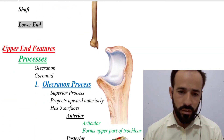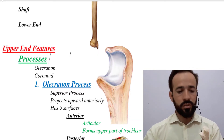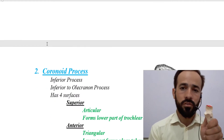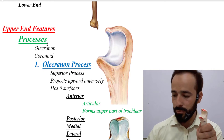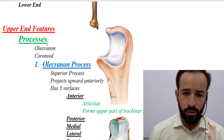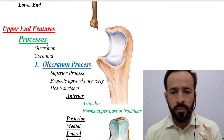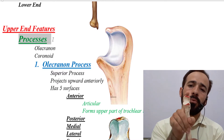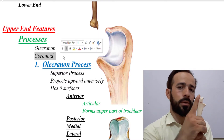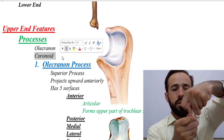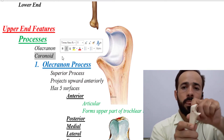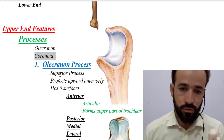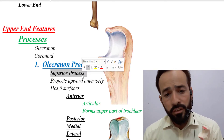The two processes are the olecranon process and the coronoid process. The superior process is the olecranon process, and the inferior lower process is the coronoid process. The olecranon process is the superior process; it projects upward and anteriorly when the bone is in its anatomical position.